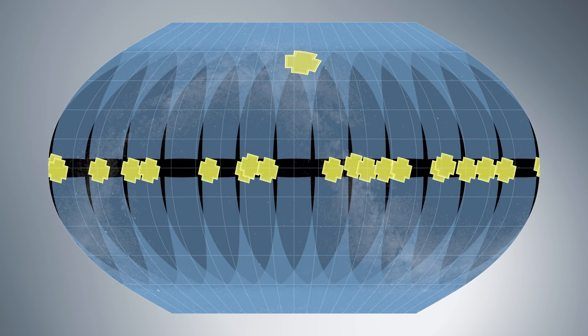TESS will study 85% of the sky, an area 350 times greater than what NASA's Kepler mission first observed, making TESS the first exoplanet mission to survey nearly the entire sky.